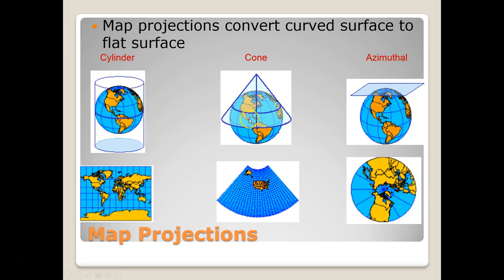We also have a conical projection. In this, we wrap a piece of paper around the Earth in a cone shape. This is used for areas at the mid-latitudes. Again, the line of tangency is where the map is the most accurate, and as we move away from that line of tangency, the map gets more distorted.